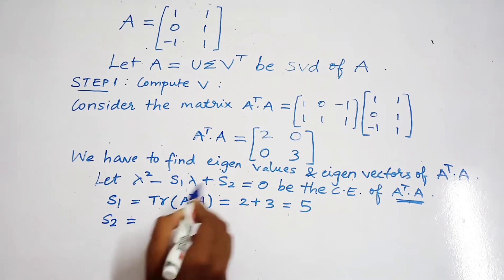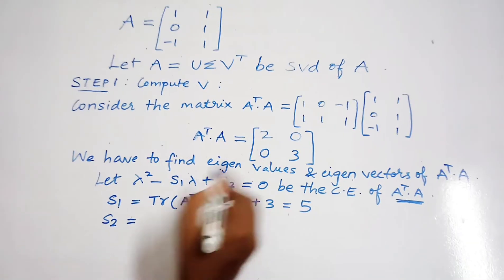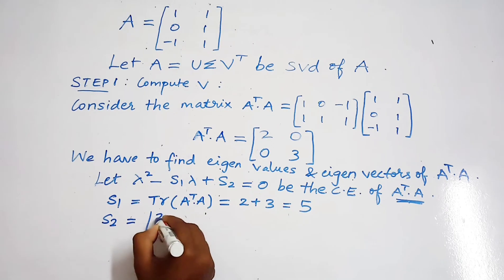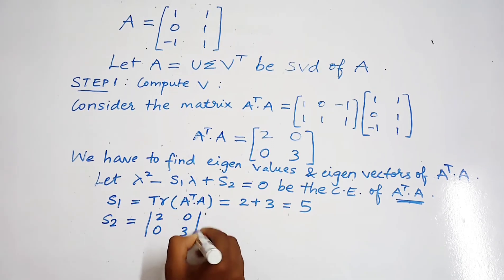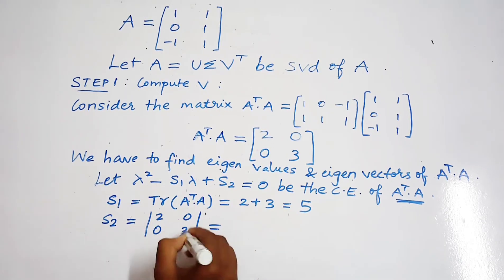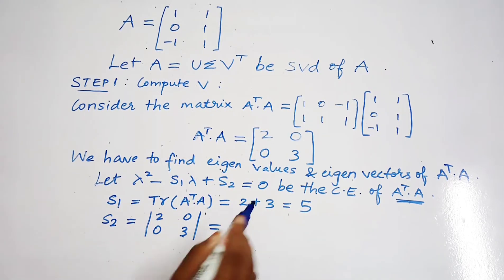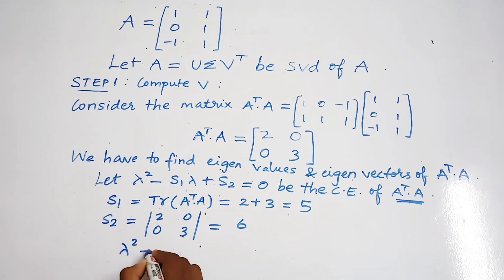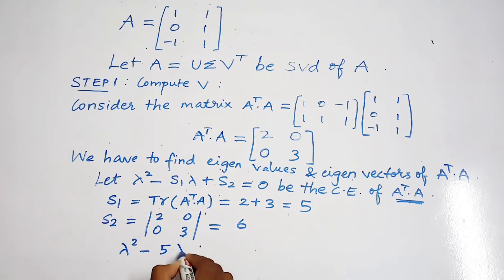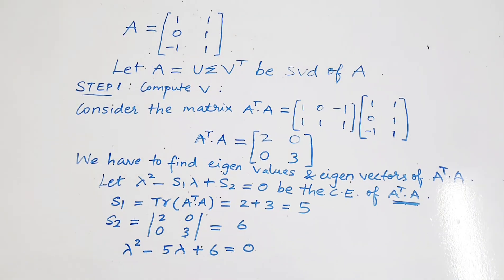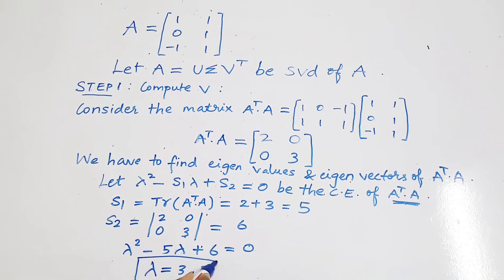Next, S2 is the determinant of the matrix A transpose A. The determinant value is 2 times 3, which is 6. So the characteristic equation obtained is lambda squared minus 5 lambda plus 6 equals 0. After solving this we get lambda equal to 3 and 2.